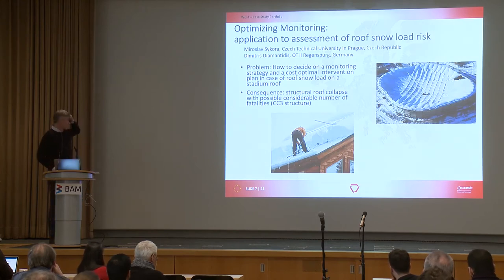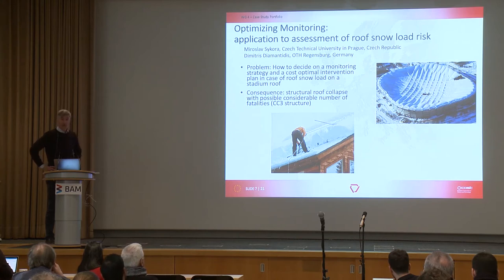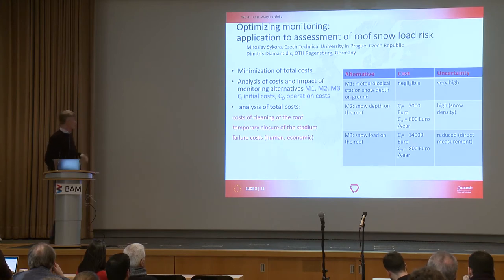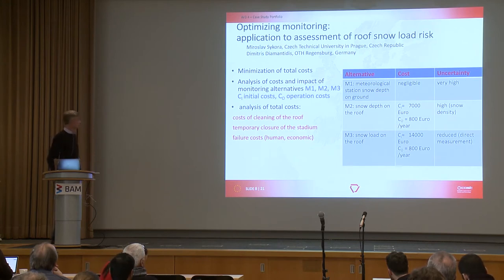The first case study was chosen because it was really the first one to be pulled through, by Dimitris Diamantidis and Miroslav Sukhova. It was about the monitoring of snow on the roof — a rather obvious example, and interestingly very topical again because of extreme snow events in the Alps. When you have a structure at risk you ask yourself: how much should I invest to monitor the snow on the roof? Three alternatives were considered for measuring or indicating the snow load: snow depth on the ground at a nearby meteorological station, snow depth on the roof, or an estimate of the snow load on the roof.